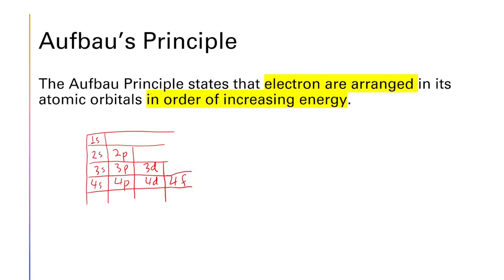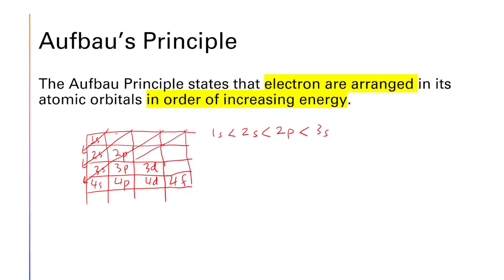To determine the order of increasing energy, draw diagonal arrows through the table. The arrow touches 1s first, so 1s is lowest energy. Next is 2s, then the arrow crosses to 2p and 3s, then 3p, then 4s, and so on.